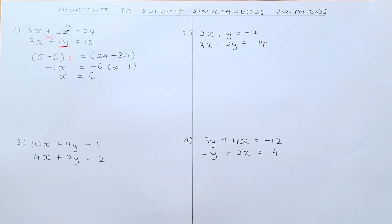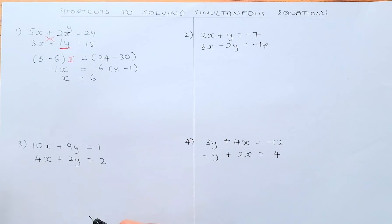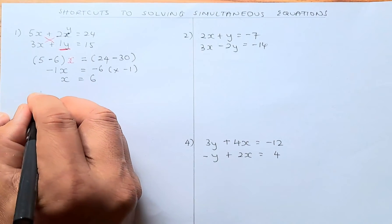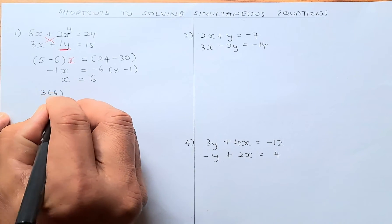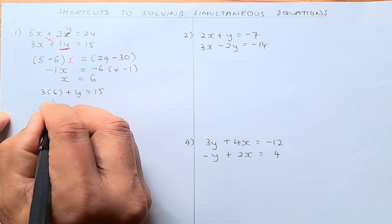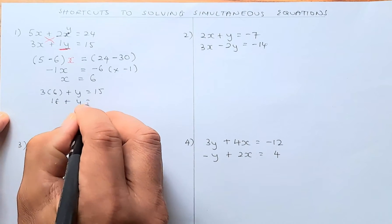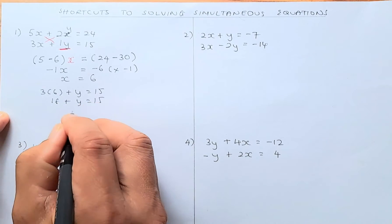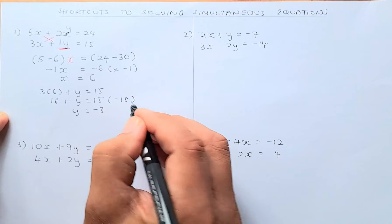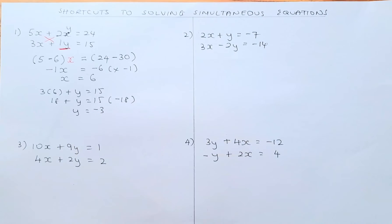Once you found x, you must find your y. You're going to substitute your x into either one of the equations. I suggest you substitute into the second equation because it's easier. So 3 times 6 plus y equals 15. So 18 plus y equals 15; y equals negative 3 because you minus 18 on both sides. So that is how you do it.